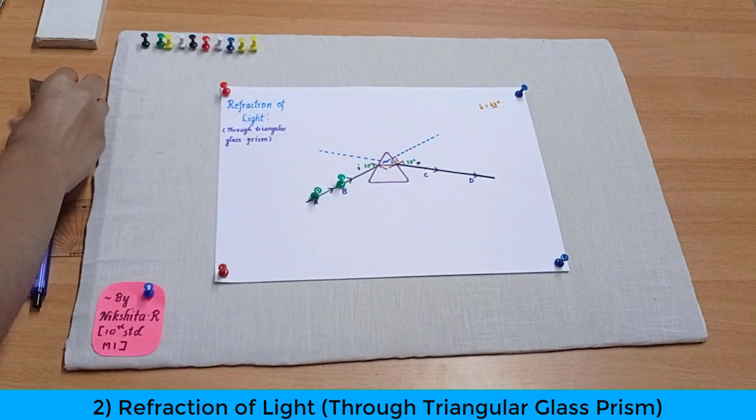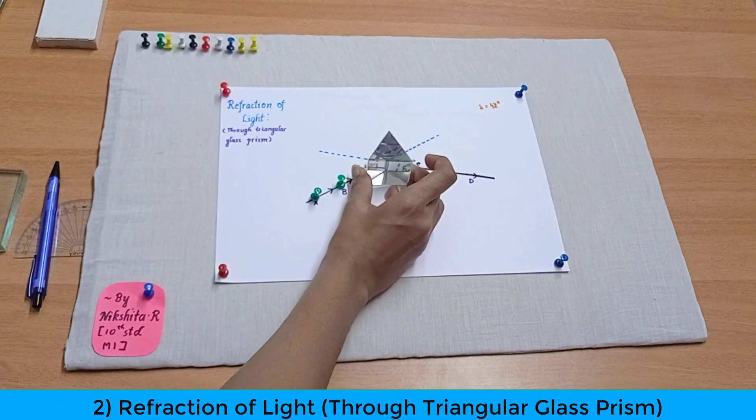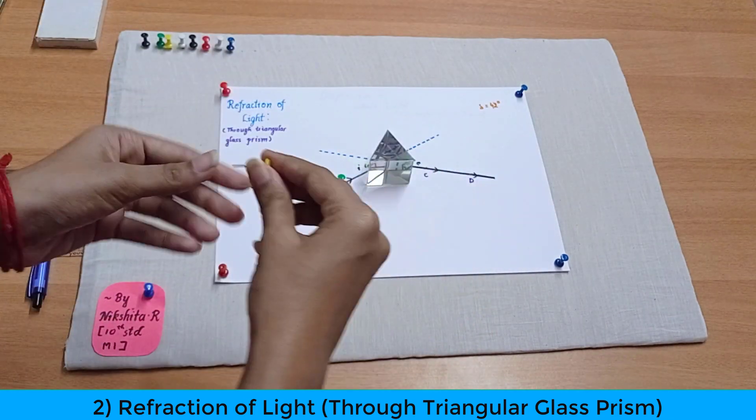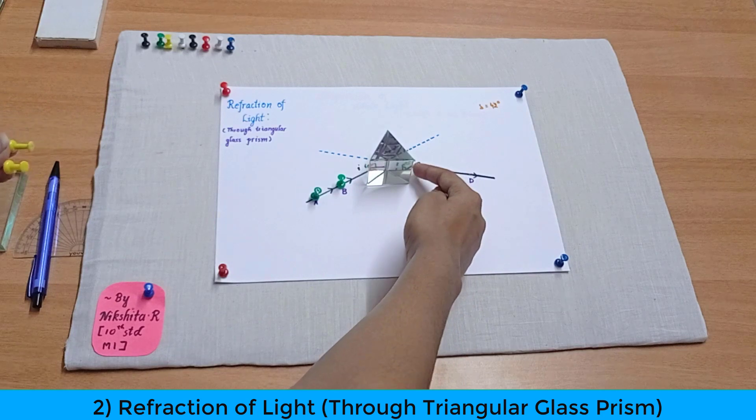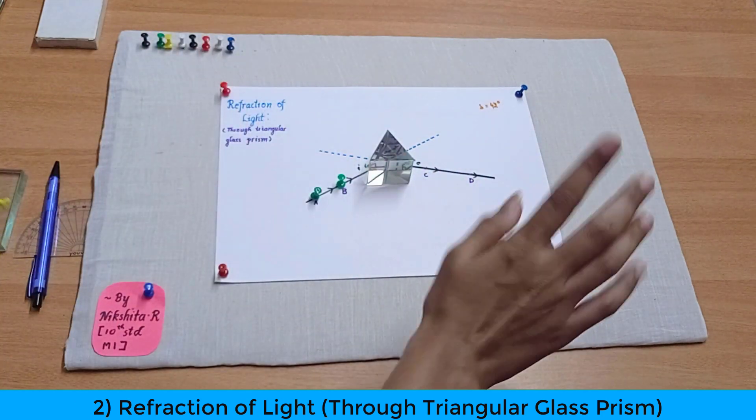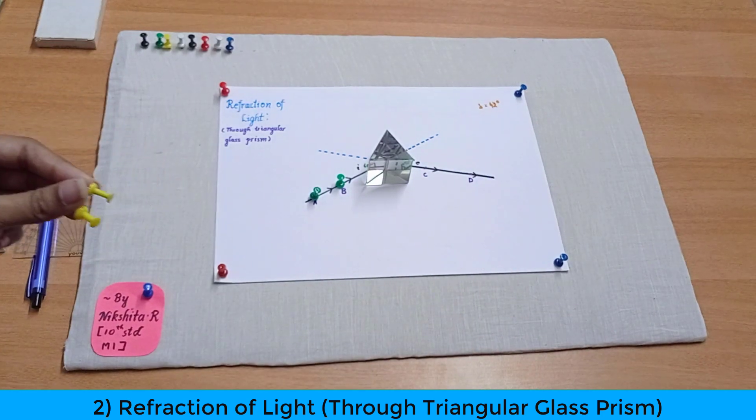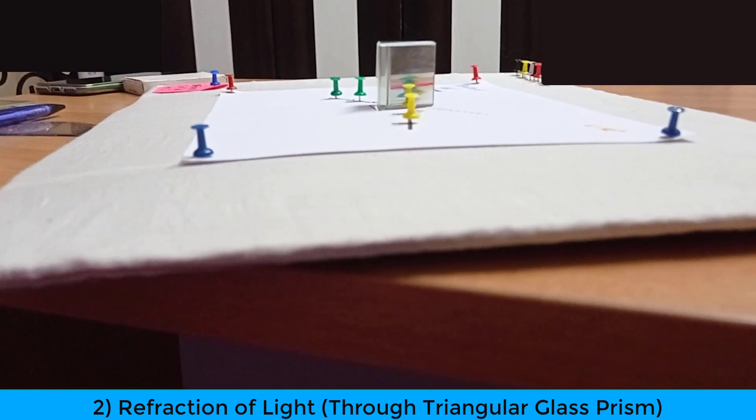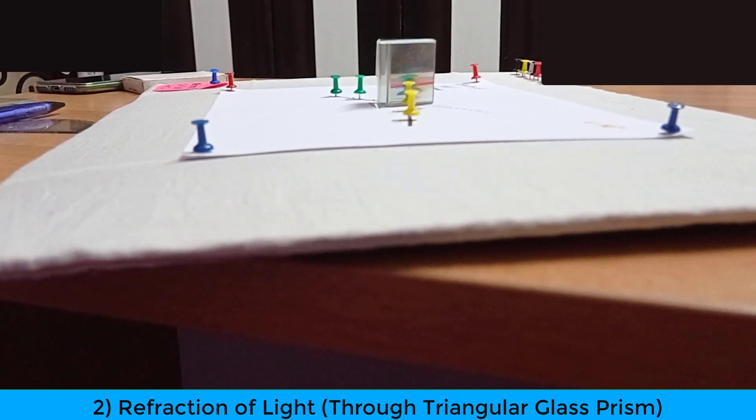So now we have to take the prism back again and place it over here. And now we have to take two more pins and place it in such a way that when we look from this side all these four pins must appear as if they are on a straight line. So now as you can see it looks as if all these four pins are on a straight line.